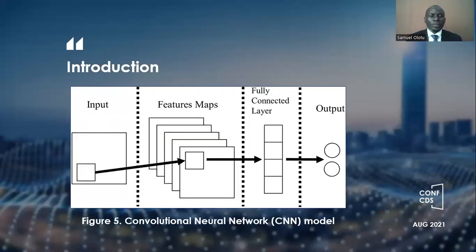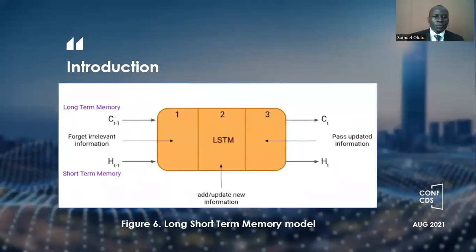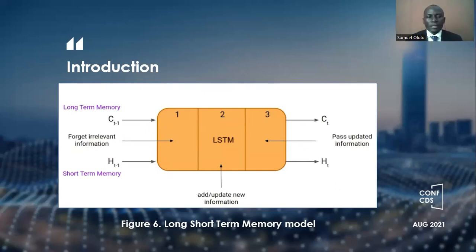The convolutional neural network has a number of layers: we have the input layer, the layer that carries out the mapping of features, and the fully connected layer that is used to produce the output. In the long short-term memory model, the first layer is the input layer, and the third is the output.